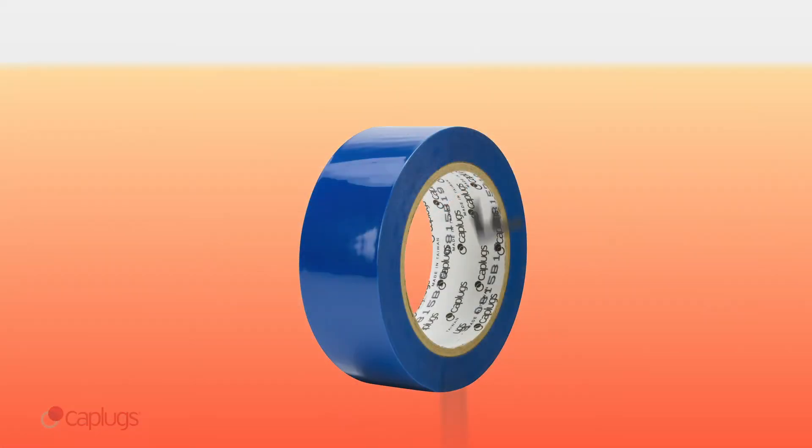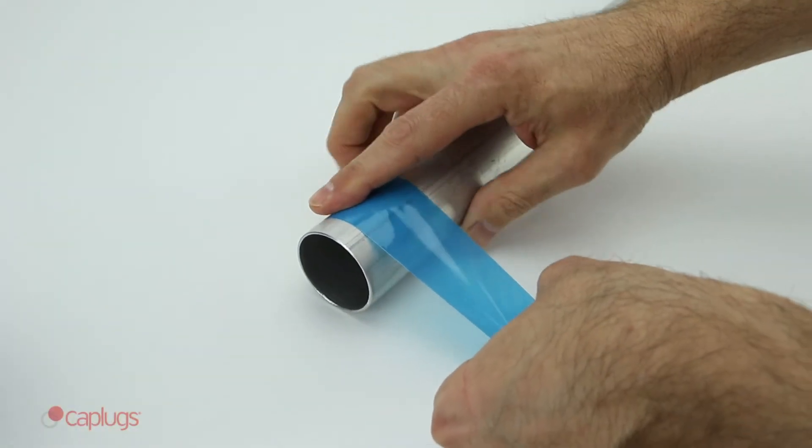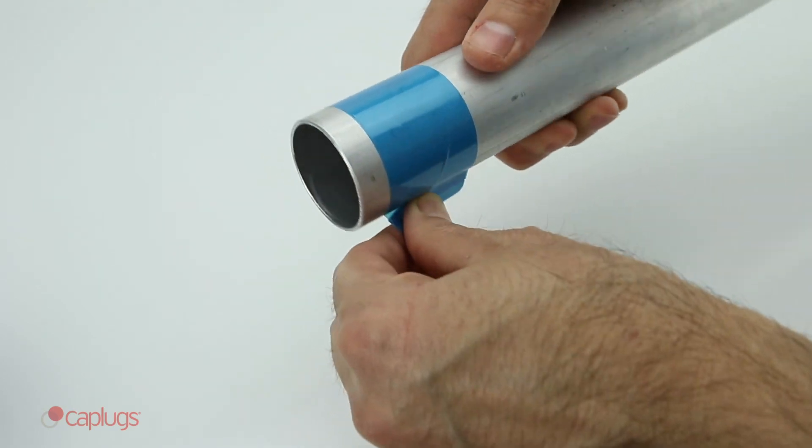PC90-SH can withstand temperatures up to 400 degrees Fahrenheit. PC90-SH is ideal for masking off areas that do not require coating.